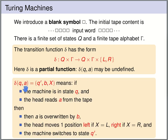If delta(q, a) = (q', b, x), this can be understood as follows: if the machine is currently in state q and reads an a on the tape, then the a is overwritten by b, the read-write head moves one position to the left if x is L, or one position to the right if x is R, and the machine switches to state q'.